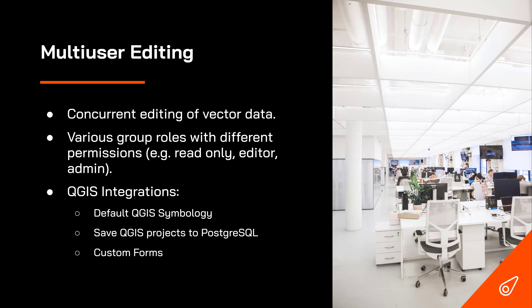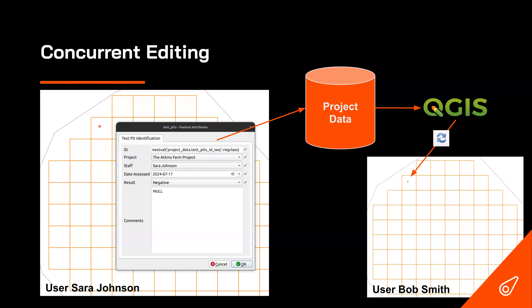Here's a visualization of concurrent editing: Sarah on the left adds a new test pit using a nice attribute form for the Atkins Farm project and saves it into the database. Bob Smith then opens QGIS and loads the test pit data — he sees that new point instantly. There's a refresh button in QGIS, but working with PostGIS data means you can simply pan or zoom and see any changes in near real-time.